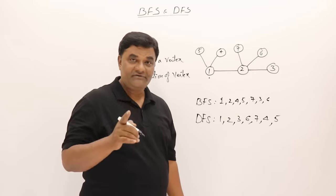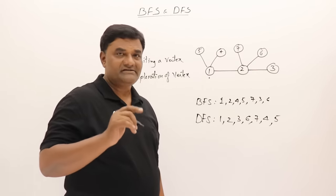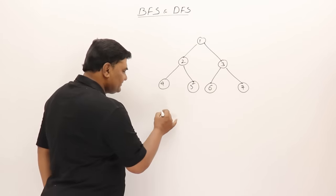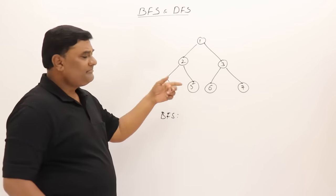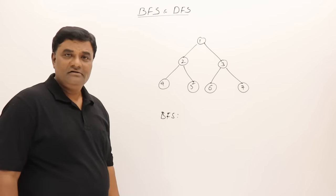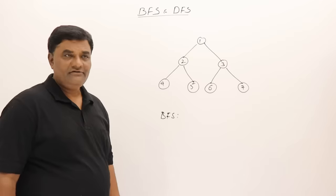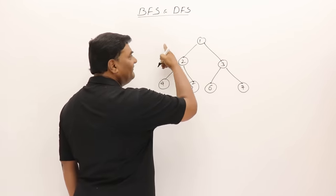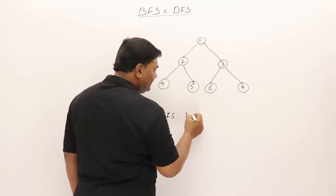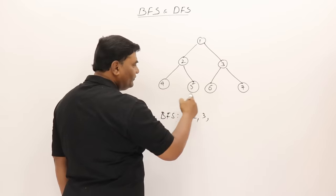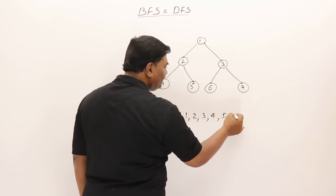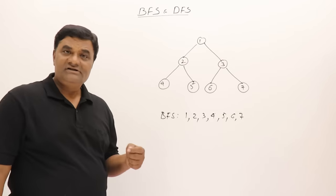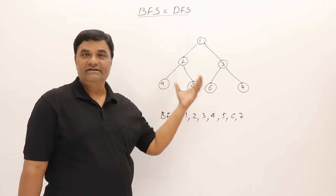Let me take one more example to explain the difference. This is a binary tree — a tree is also a graph. For breadth first search, as per binary tree I will perform level order: 1, then 2 and 3, then 4, 5, 6, 7. So breadth first search is just like a level order traversal on a binary tree.